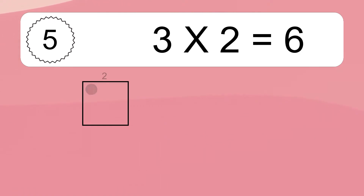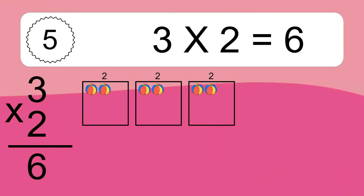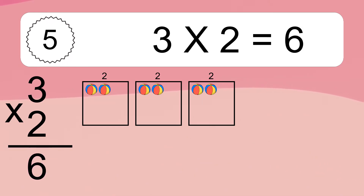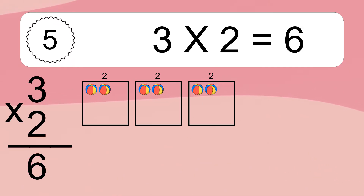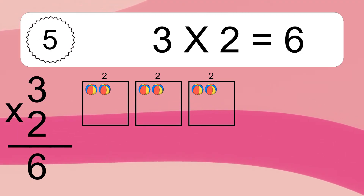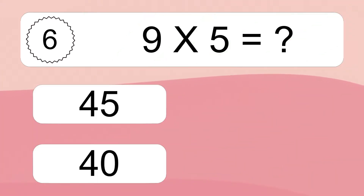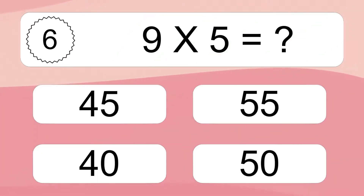3 times 2 equals 6. We have 3 boxes, and each box has 2 colorful balls inside. If you count all the balls in all the boxes together, you will have 3 times 2 balls. This equals 6 balls. 9 times 5 equals what?